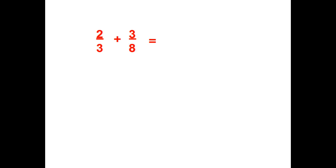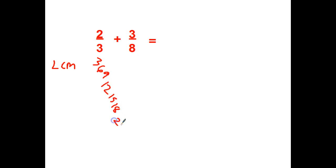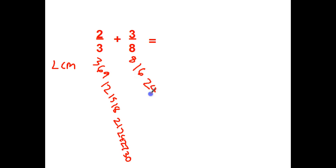2 thirds plus 3 eighths — can I take 3 times something to equal 8? Nope. So I need to find the LCM of them. Multiples of 3: 3, 6, 9, 12, 15, 18, 21, 24. Multiples of 8: 8, 16, 24. There we go — 24. I'm going to change them both to 24.